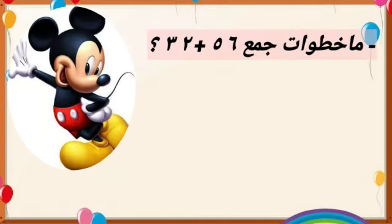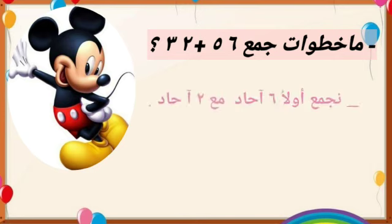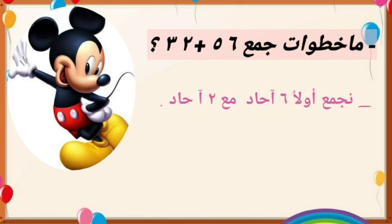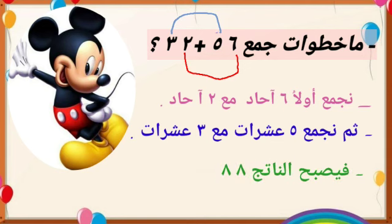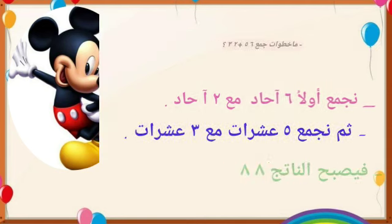السؤال الأخير: ما خطوات جمع خمسة وستون زائد اثنان وثلاثون؟ هيا، من منكم يذكر هذه الخطوات؟ نجمع أولاً ستة آحاد مع اثنان آحاد، ثم نجمع خمس عشرات مع ثلاث عشرات، فيصبح الناتج ثمانية وثمانون. أحسنت، وفقك الله.